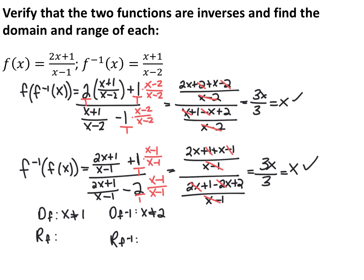For domains and ranges, the easiest way is to find the domain of each function. The domain of the original function f is x cannot be 1, and the domain of the inverse function is x cannot be 2. Because these are inverses, their inputs and outputs are switched — so the domain of the original function is the same as the range of the inverse function, meaning y cannot be 1. And the domain of the inverse is the same as the range of the original, so y cannot be 2.